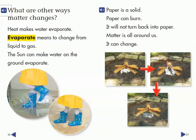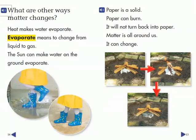What are other ways matter changes? Heat makes water evaporate. Evaporate means to change from liquid to gas. The sun can make water on the ground evaporate.